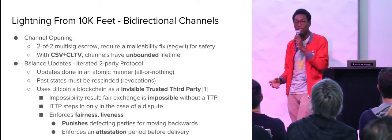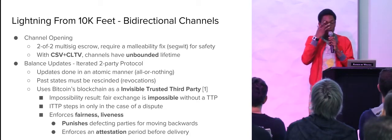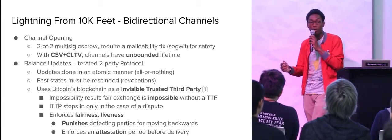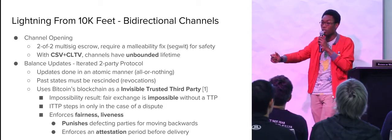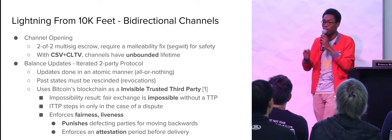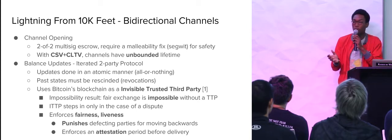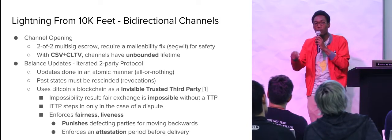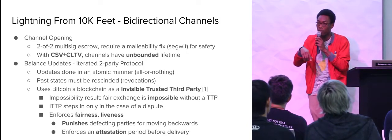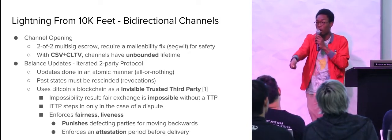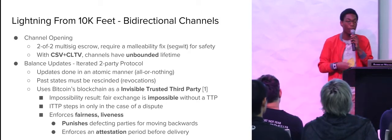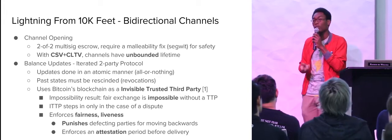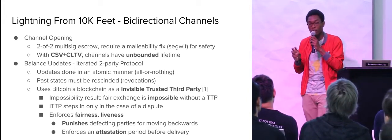Balance updates are basically a two-party iterated protocol where we try to do all the updates in an atomic manner. I push Alice money, she accepts this new state and then revokes the old state. It's important that Alice revokes the prior state, because otherwise she can go back to the state where she has the most money. In order to do that revocation, we rip up all the prior states such that if Alice tries to broadcast a prior state, I can punish her. The way I punish Alice is by using the Bitcoin blockchain itself — what I call, referencing a paper by Macaulay, an invisible trusted third party.